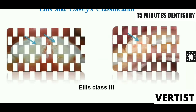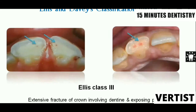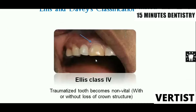LS class 3 is an extensive fracture of the crown in which enamel and dentine are involved and the pulp is also exposed. It can be a pinpoint exposure or a larger exposure. So LS class 3 is a pulp exposure. LS class 4 is when the traumatized tooth becomes non-vital, which can be ascertained by discoloration or confirmed with electrical pulp vitality testing.